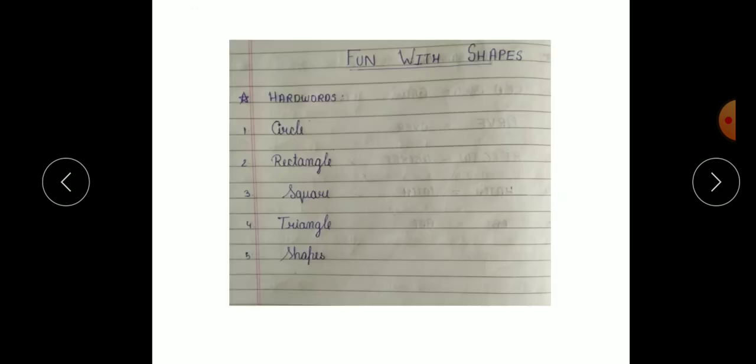Now next, hard words. C-I-R-C-L-E, circle. R-E-C-T-A-N-G-L-E, rectangle. S-Q-U-A-R-E, square. T-R-I-A-N-G-L-E, triangle. S-H-A-P-E-S, shapes. So you have to write this hard word in your CW notebook one time and HW notebook two times.